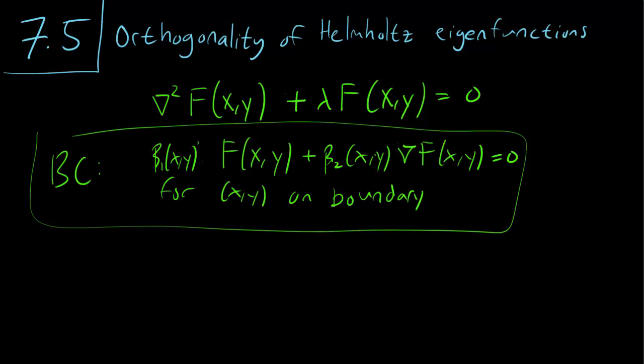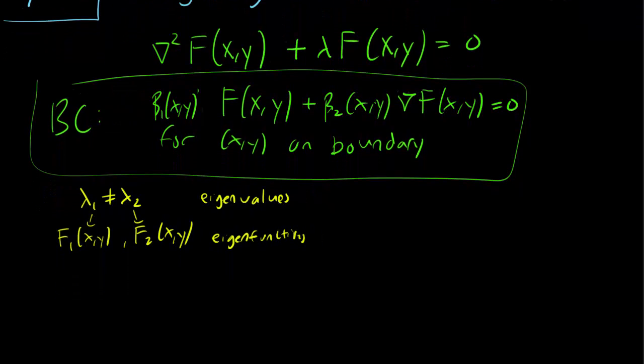Let's consider two eigenvalues lambda1 and lambda2 that are different, with corresponding eigenfunctions F1 and F2. Let's write down the Helmholtz equation for both of these eigenvalues. For the first eigenvalue, we have Laplacian of F1 plus lambda1 F1 equals 0. For the second eigenvalue, we have Laplacian of F2 plus lambda2 F2 equals 0.